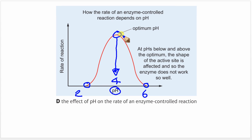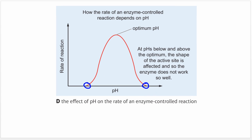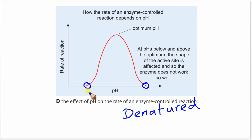So I've described what's happening on the graph. Now I need to explain it. I can explain the rate of reaction based on the shape of the active site of the enzyme. At the two extreme points where there is no rate of reaction, the active site does not fit the substrate — or rather, the substrate doesn't fit in the active site. At these extreme pHs, the enzyme is denatured. It doesn't work because the substrate will not fit in the active site. Enzymes operating below or above those pH values won't work either.